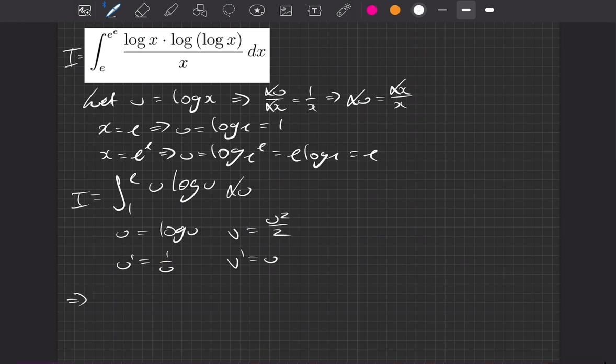So that means then I is going to be equal to u times v. So it's u squared on 2 multiplied by log u, evaluated at 1 and at e. Subtract then, we still need to integrate from 1 to e of u dash multiplied by v. We have a u squared and a 1 on u, so that's going to leave then just u. And we have a half as well, still with respect to u.